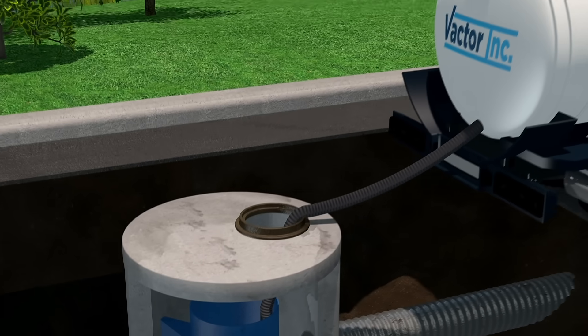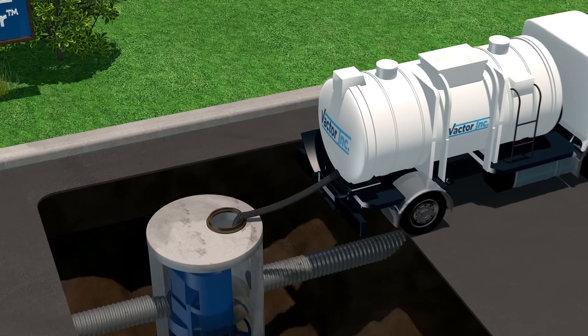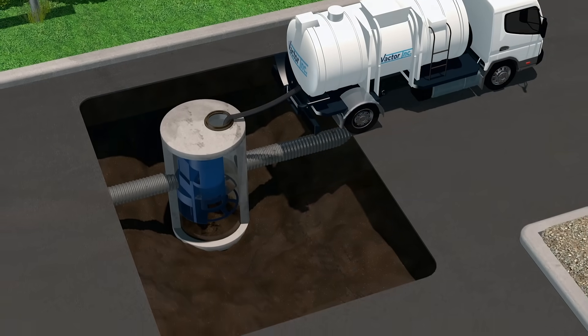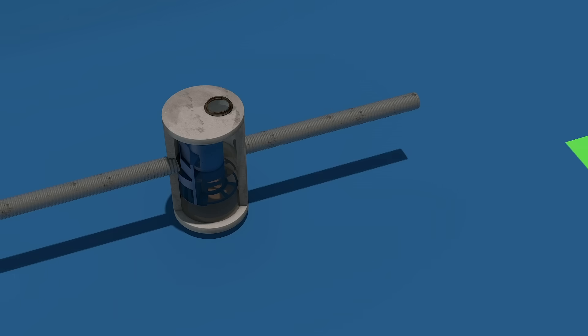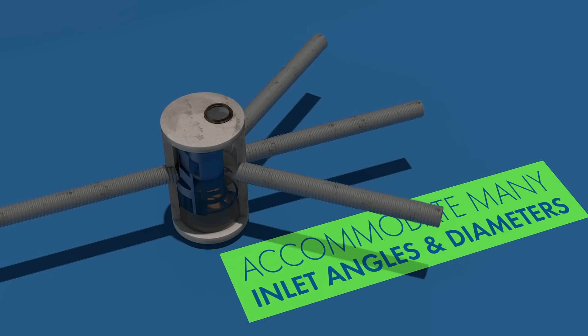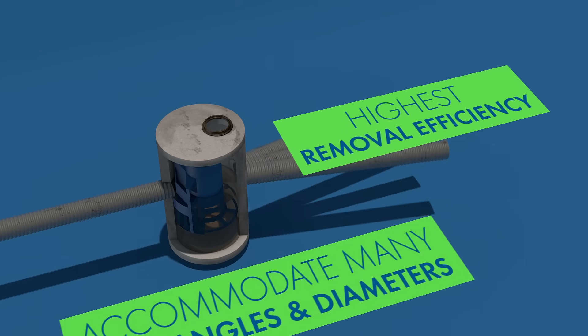maintenance of the Cascade Separator is extremely simple and can be performed from finish grade via a vacuum hose through the center cylinder. The Cascade Separator can accommodate a large range of inlet pipe angles and diameters.